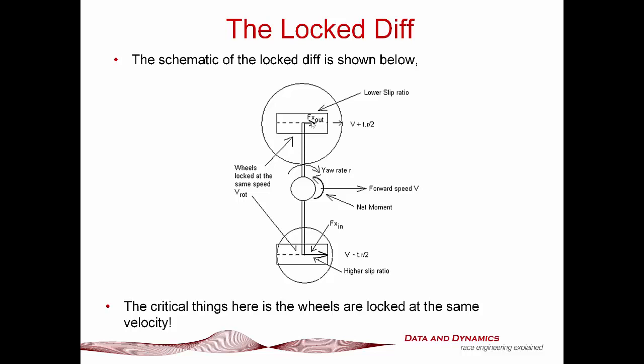And here's the problem inherently faced by the locked diff. What happens with the locked diff? Both the outside wheel and the inside wheel are locked at the same velocity. So what happens is that when you are within your traction circle radius limits, because you get a higher slip ratio on the inside wheel and a lower slip ratio on the outside wheel, that initial turn in right to the mid corner, you get absolutely and utterly horrid understeer.